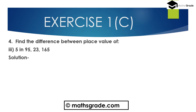Part 3: find the difference between the place values of 5 in 95,00,23,165. The place value of the first 5 is 5,00,00,000 and the place value of the second 5 is 5. So the difference is 4,99,99,995.